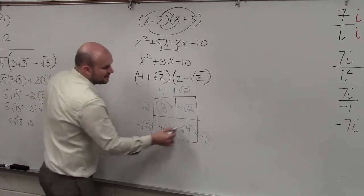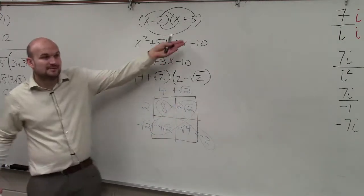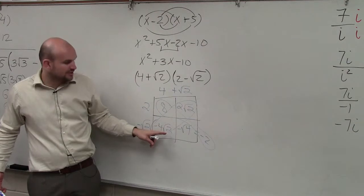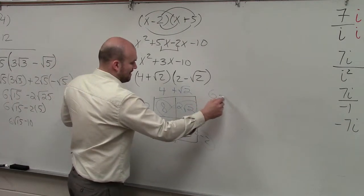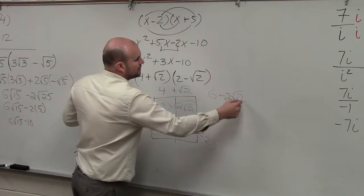And these are both terms, but like I did at the beginning of the class, they both have the square root of 2. So you can combine them. So my final answer is going to be 6 minus 2 square root 2.